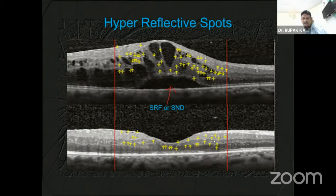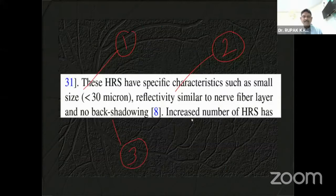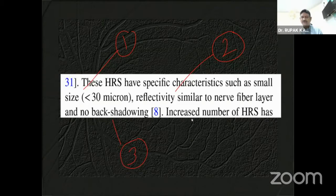I'll give you an example. This is a hyperreflective spot, and this is the presence of subretinal fluid in the subfoveal area — this is one of the important prognostic markers. These hyperreflective spots have a very small size, usually less than 30 microns, and their reflectivity is similar to the nerve fiber layer. There is no backscattering. By this way, you can differentiate whether it is a hard exudate or actually a hyperreflective spot.